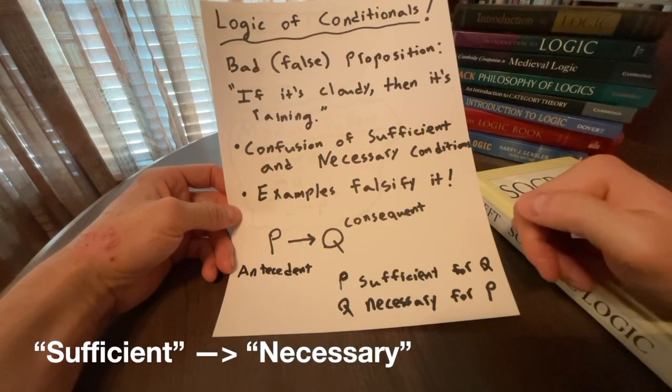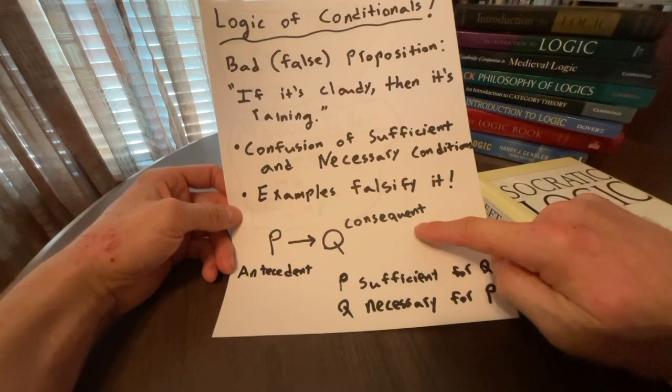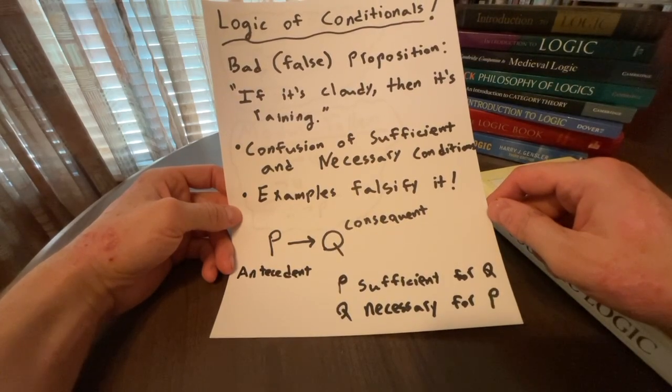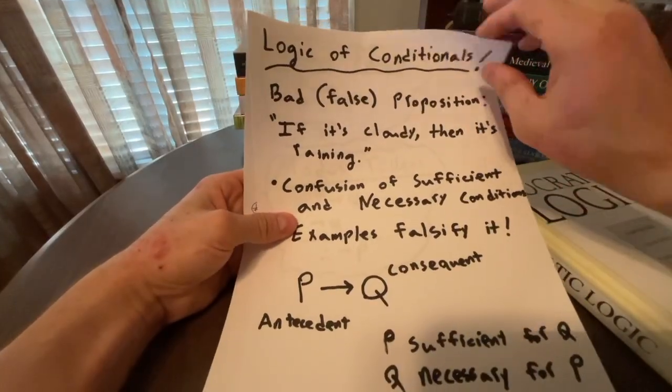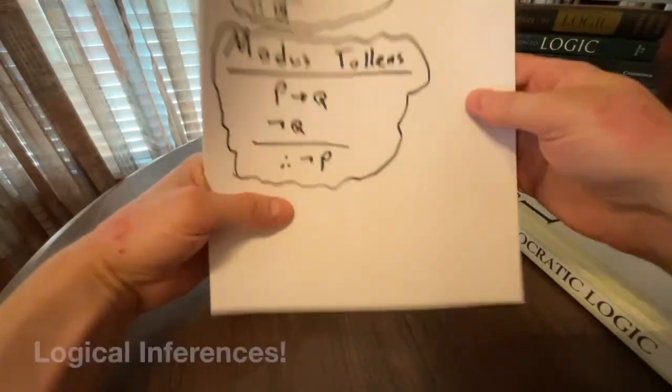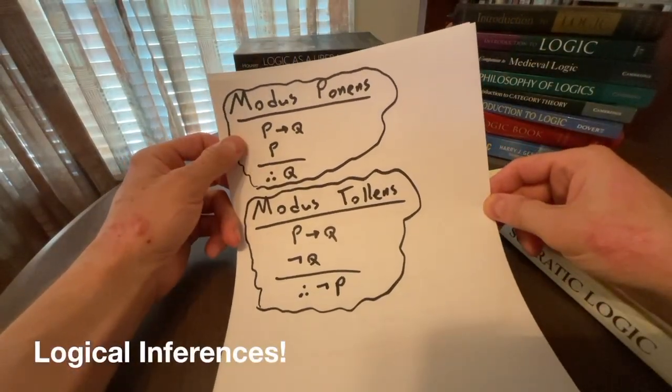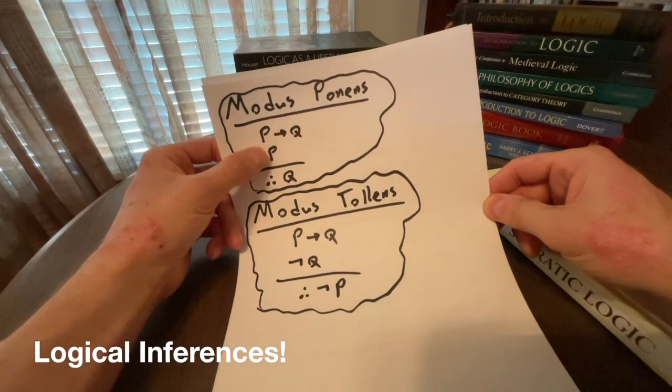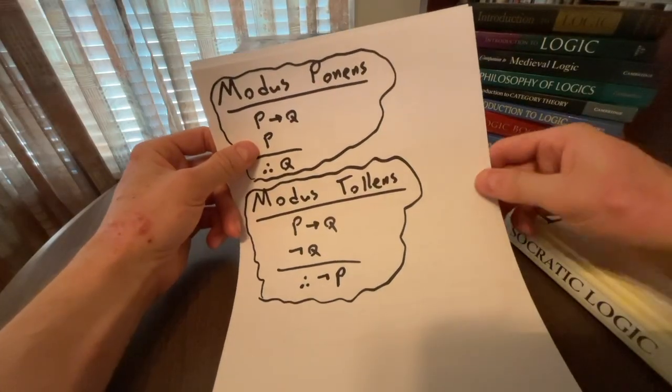Remember that, and then you will remember conditionals. And you will also understand what makes a good inference or what makes a bad inference when it comes to arguments that contain these types of propositions. So there really are two types of good inferences with this. So we have what's called modus ponens and then modus tollens. So with modus ponens, we have if P, then Q, P, therefore Q. So P is sufficient for Q. So if P is indeed the case, Q will be the case.